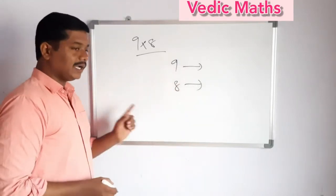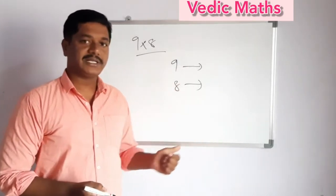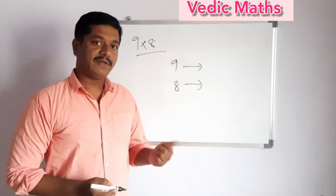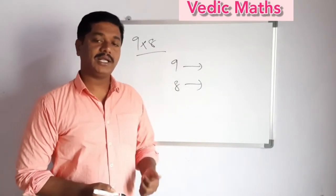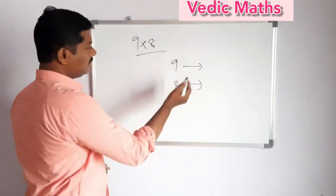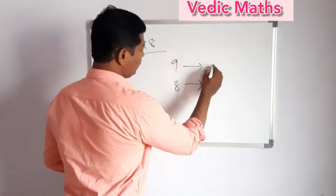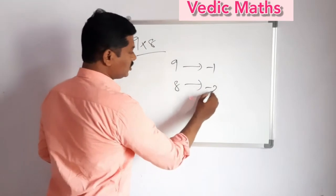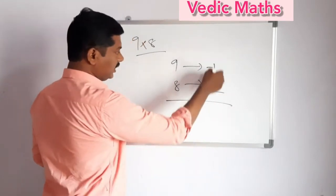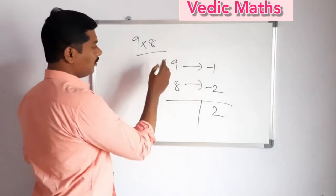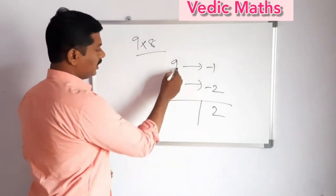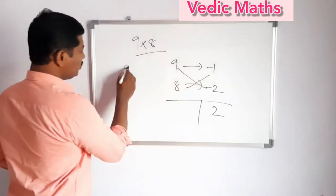This is the first interval: 9 minus 10 is minus 1, and 8 minus 10 is minus 2. Compare the difference. If I get this, look at minus 1, that was the difference. That multiply 1, 2, and next step, the diagonal difference is equal, so 9 minus 2.